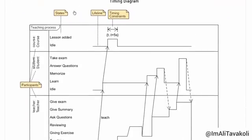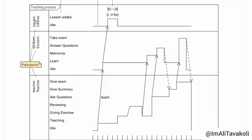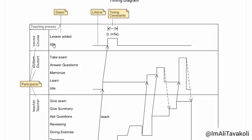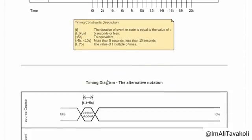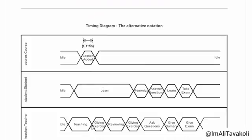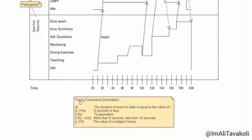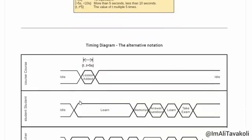Here is an example of a Timing Diagram. Here are our participants, and each participant has different states. We specify those states in order, and each state may take a specified time, which we can show with a Lifeline. We also have Timing Constraints, which will be explained later.